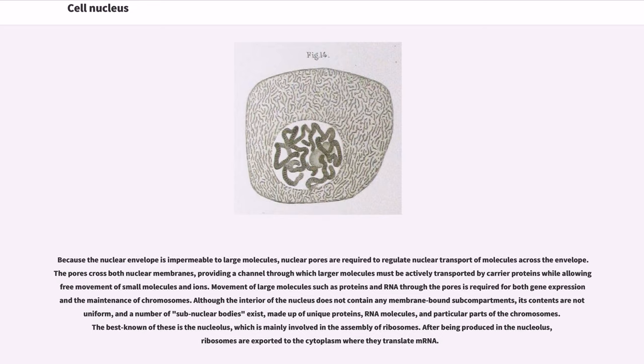Although the interior of the nucleus does not contain any membrane-bound sub-compartments, its contents are not uniform, and a number of sub-nuclear bodies exist, made up of unique proteins, RNA molecules, and particular parts of the chromosomes. The best known of these is the nucleolus, which is mainly involved in the assembly of ribosomes. After being produced in the nucleolus, ribosomes are exported to the cytoplasm where they translate mRNA.